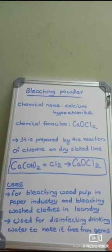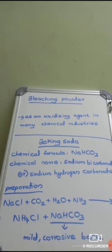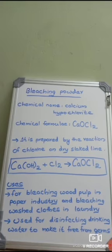It is used for disinfecting drinking water to make it free from germs. It is also used as an oxidizing agent in many chemical industries. To conclude, the chemical formula of bleaching powder is CaOCl₂, the chemical name is calcium hypochlorite, and it is prepared by treating calcium hydroxide with chlorine.